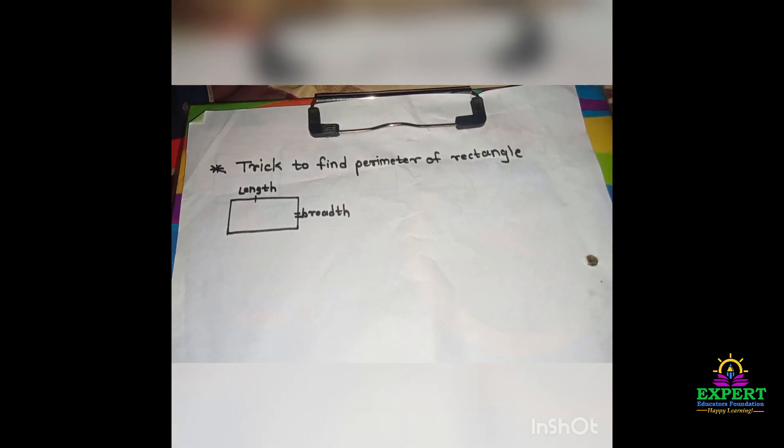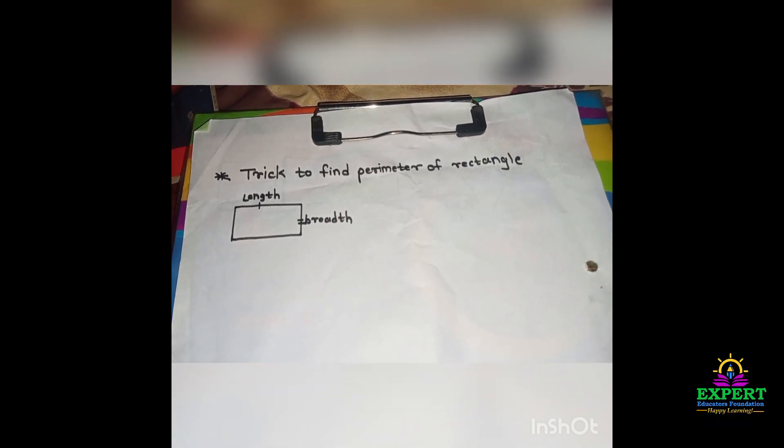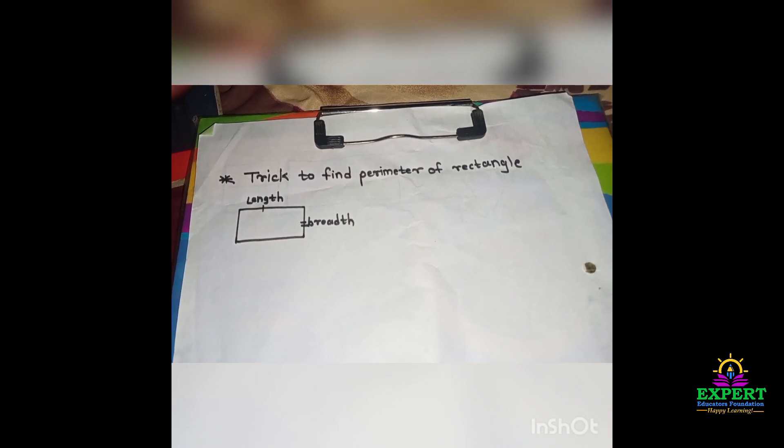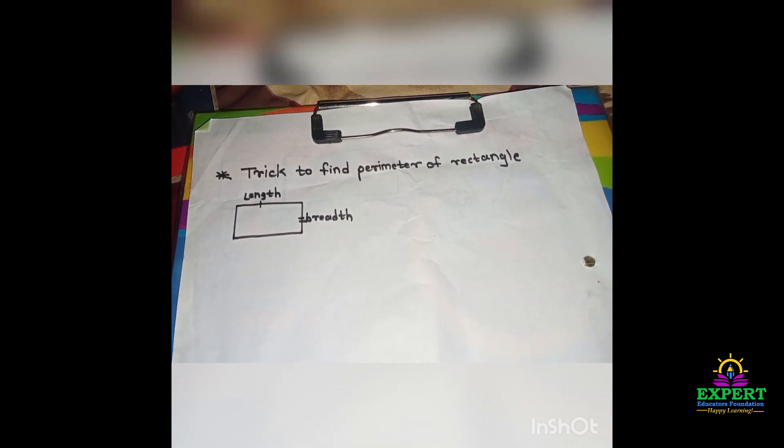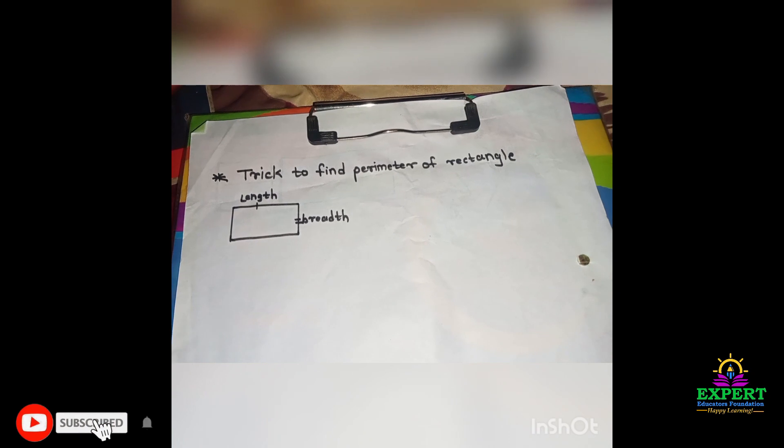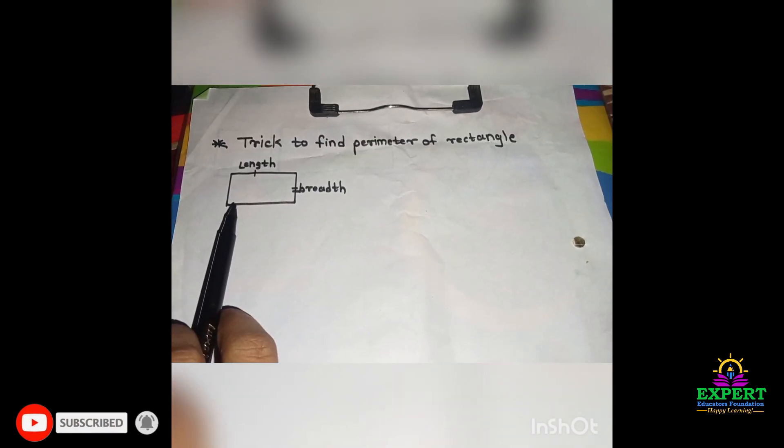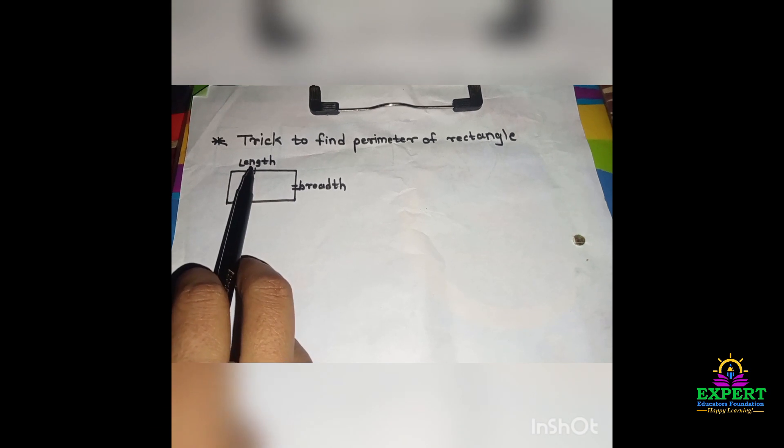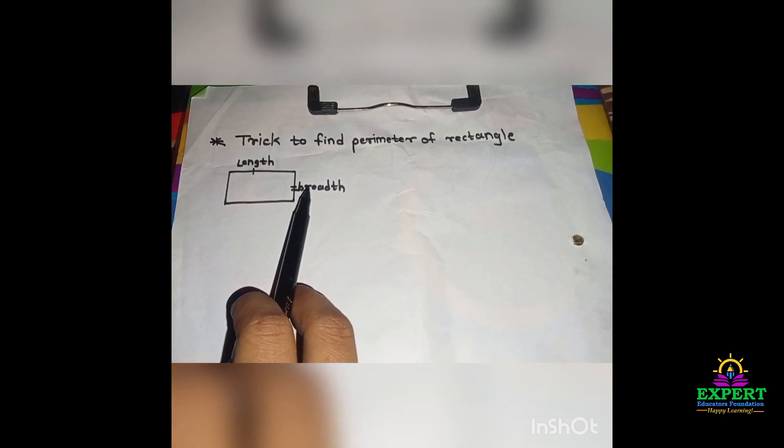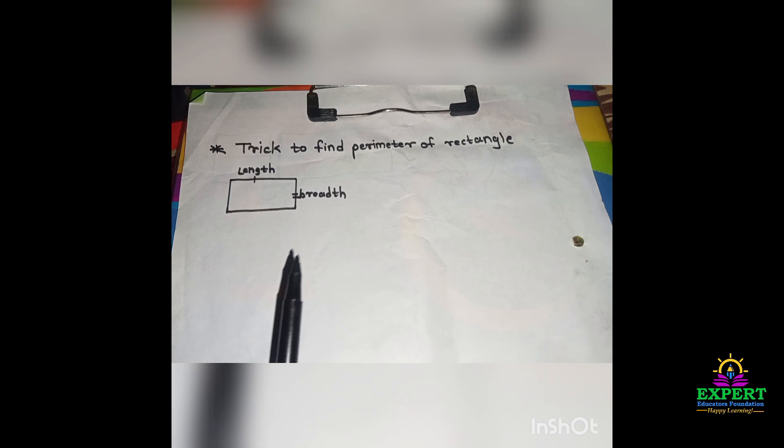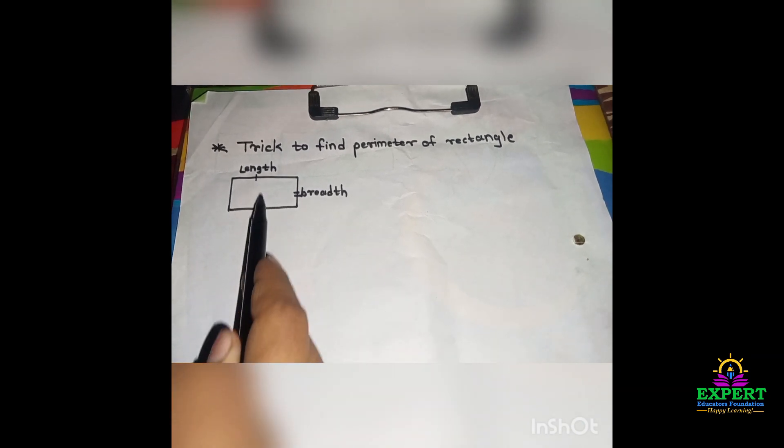Hi guys, today we'll learn a trick to find the perimeter of a rectangle. First, we'll understand the formula for perimeter. Here is a rectangle with its length and breadth. Always remember, opposite sides of a rectangle are always congruent.